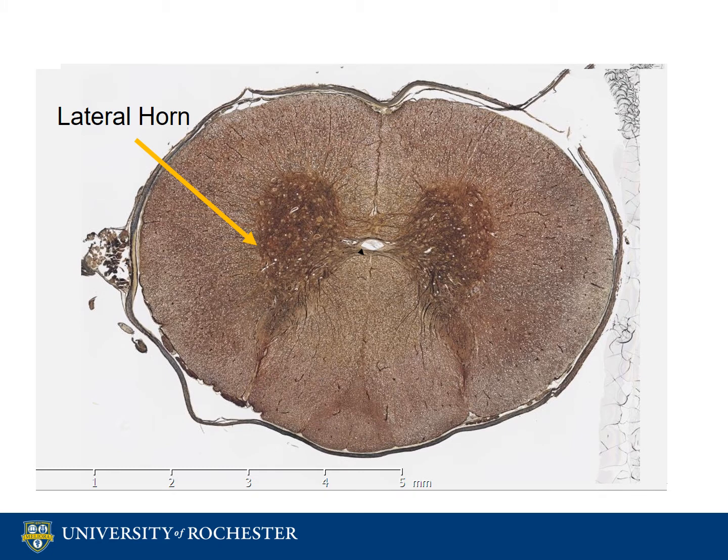The third horn is in between the two other horns, but closer to the anterior median fissure. It is called the lateral horn and it receives signals from the brain stem, organs, and hypothalamus.